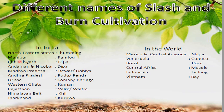Most of these countries are located near the equator, where a hot and wet climate exists and dense evergreen forest is found. In dense forested areas, this type of slash and burn agriculture is practiced.